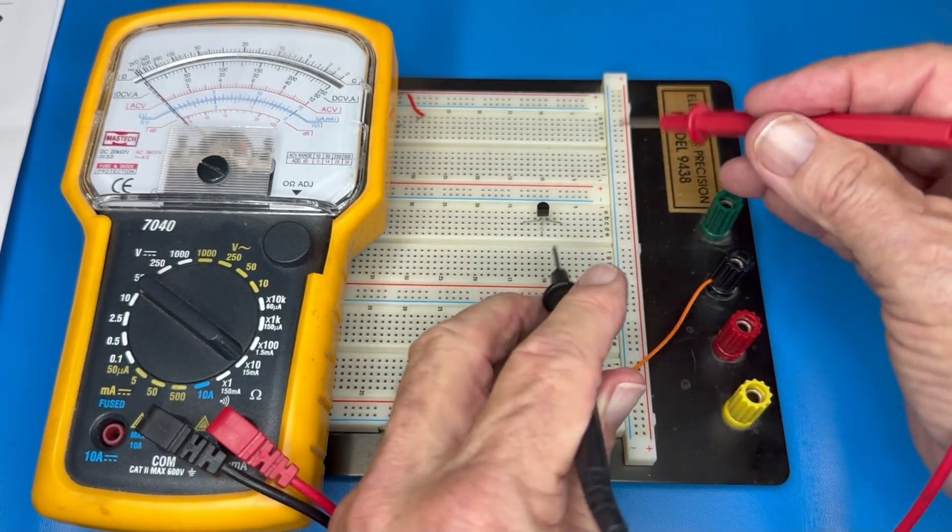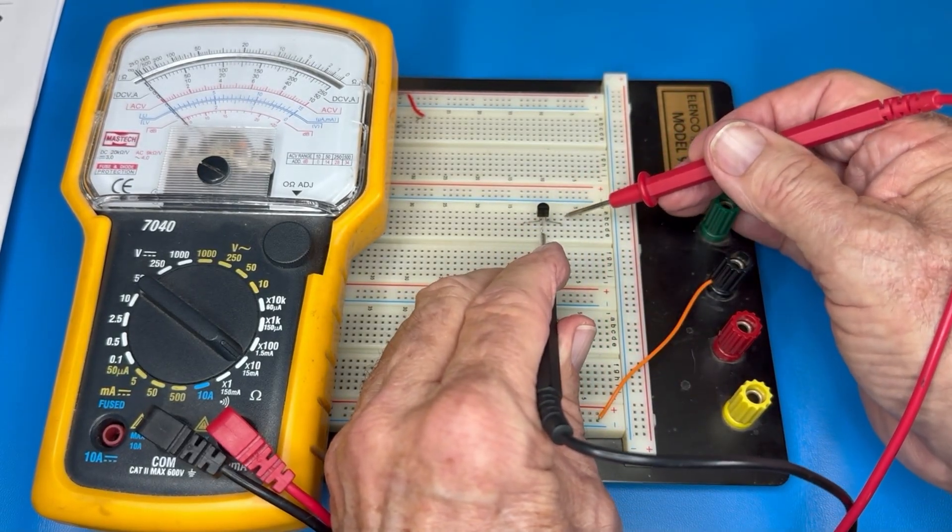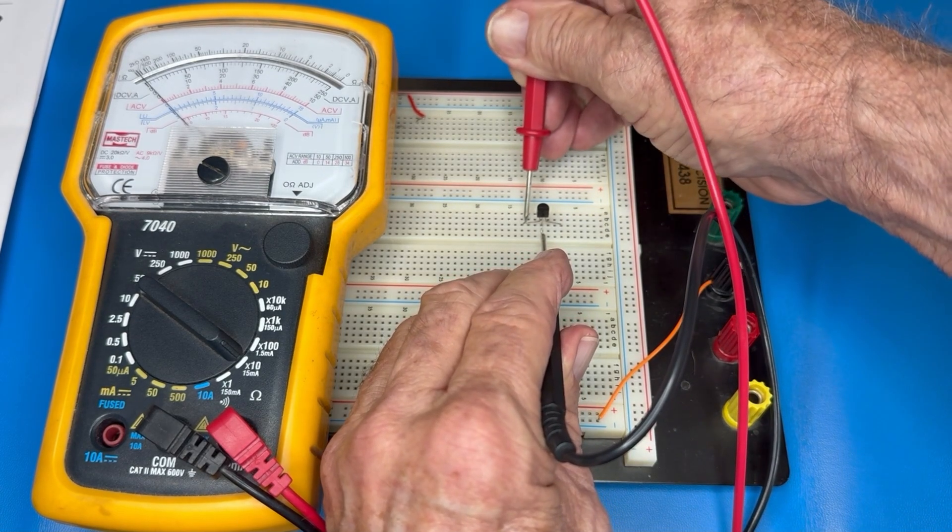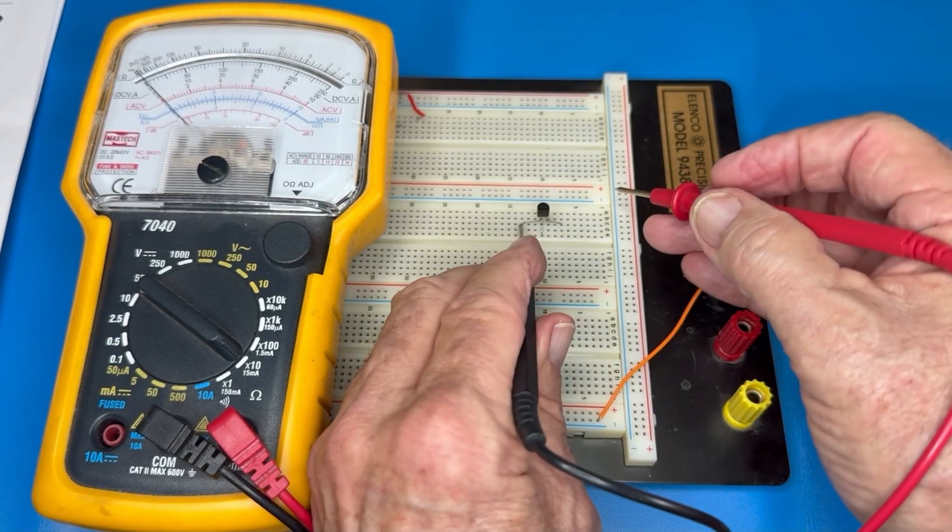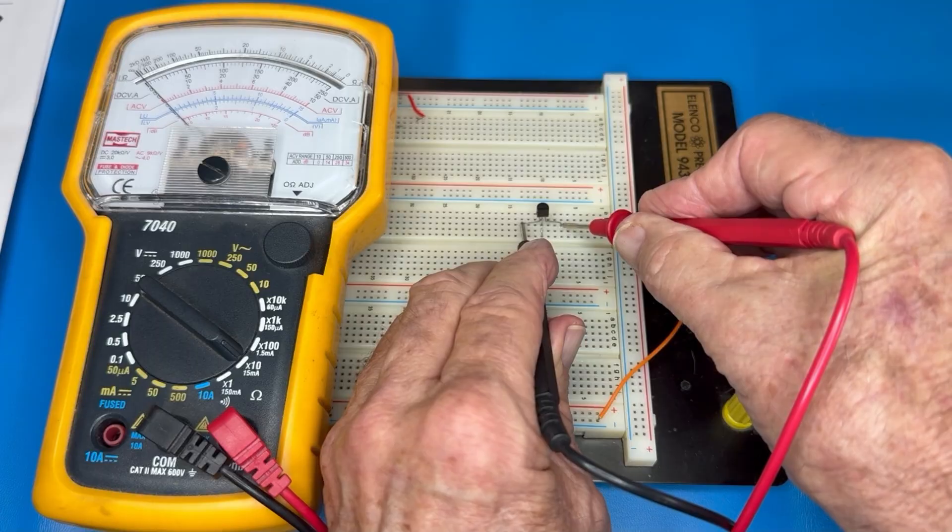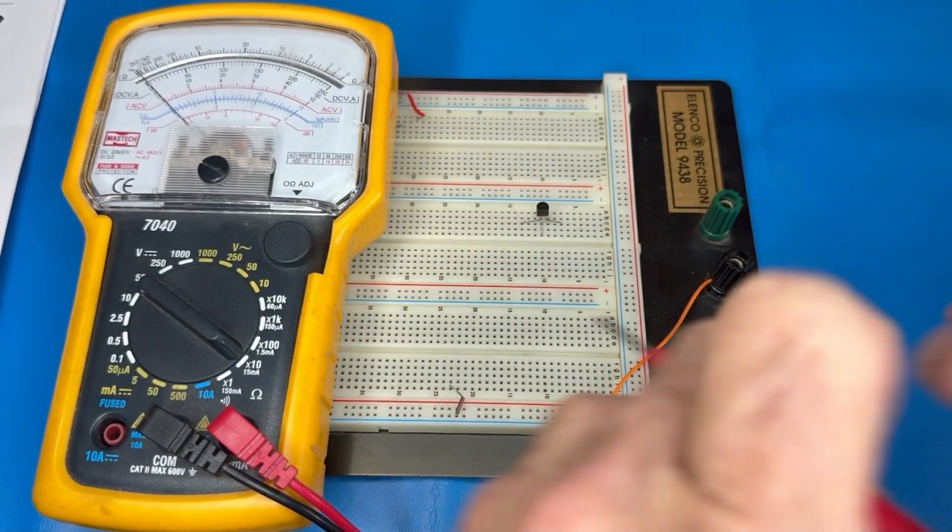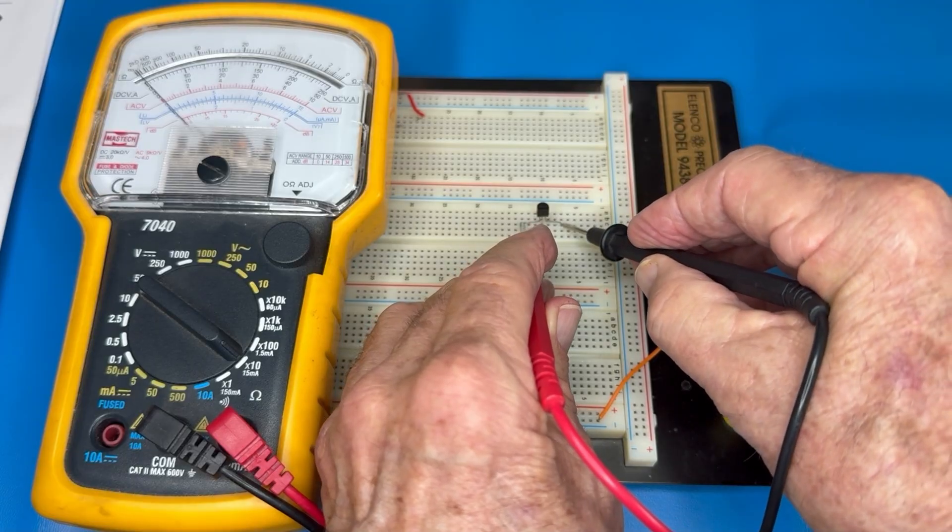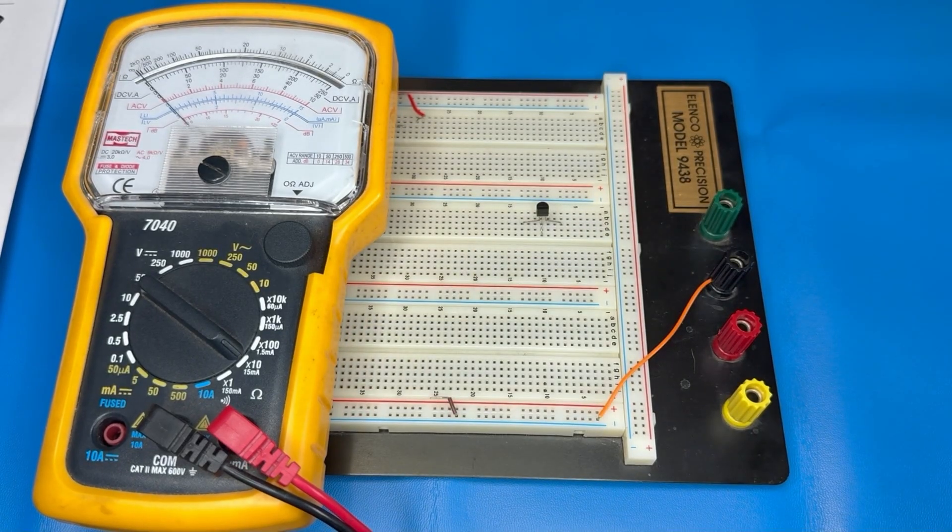We'll reverse bias it. Should have no conduction. No conduction. To the emitter, no conduction. Emitter to collector should be no conduction, because there's nothing on the base. And we swap the leads and do it again. We have no conduction. So this PNP 2N3906 transistor is good.